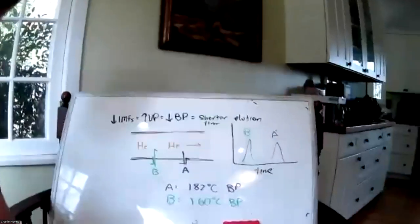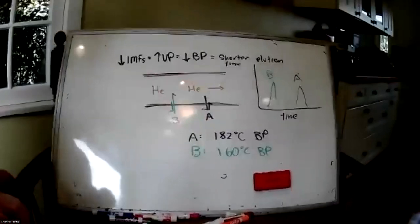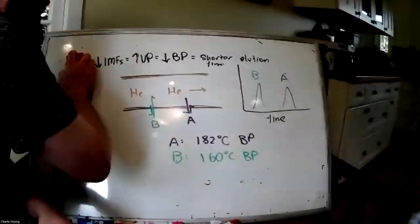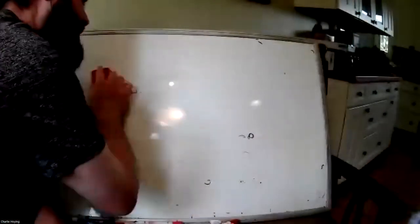Hey everybody, welcome back to another OCHEM video. Today we'll be covering the last part of organic chemistry reactions for the MCAT, which will be on carboxylic acids and their derivatives. We'll start by ranking the reactivity of carboxylic acids and their derivatives.